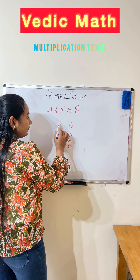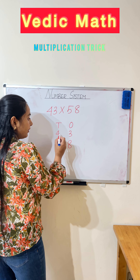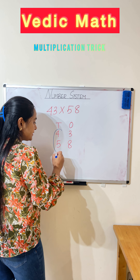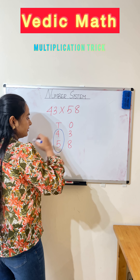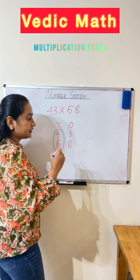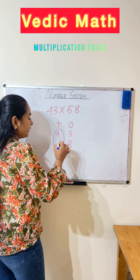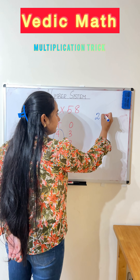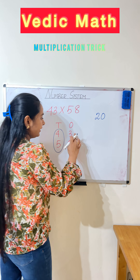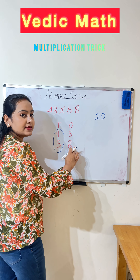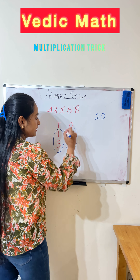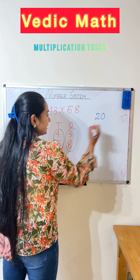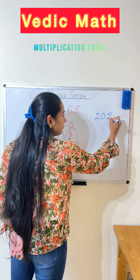First, we need to multiply the tens place digit: 4 into 5 is 20. Then the units place — multiply these two numbers: 3 into 8 is 24.